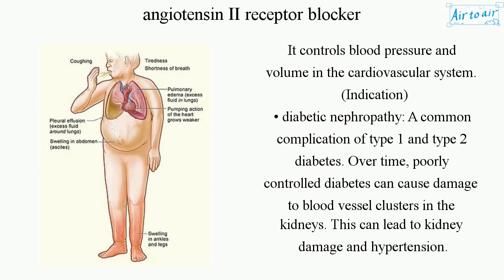Indication: Diabetic nephropathy — a common complication of type 1 and type 2 diabetes. Over time, poorly controlled diabetes can cause damage to blood vessel clusters in the kidneys. This can lead to kidney damage and hypertension.